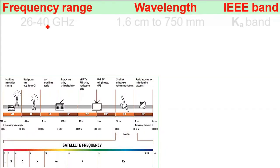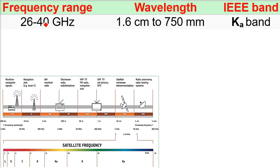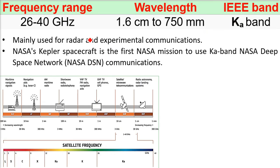Then we have the Ka band. Ka, Ku, K and Ka. Ku was K under, Ka is K above. This is 26 to 40 gigahertz, mainly used for radar and experimental communication. NASA's Kepler spacecraft is the first NASA mission to use Ka band. NASA deep space network, NASA DSN communication, 20 to 60 gigahertz, Ka band.